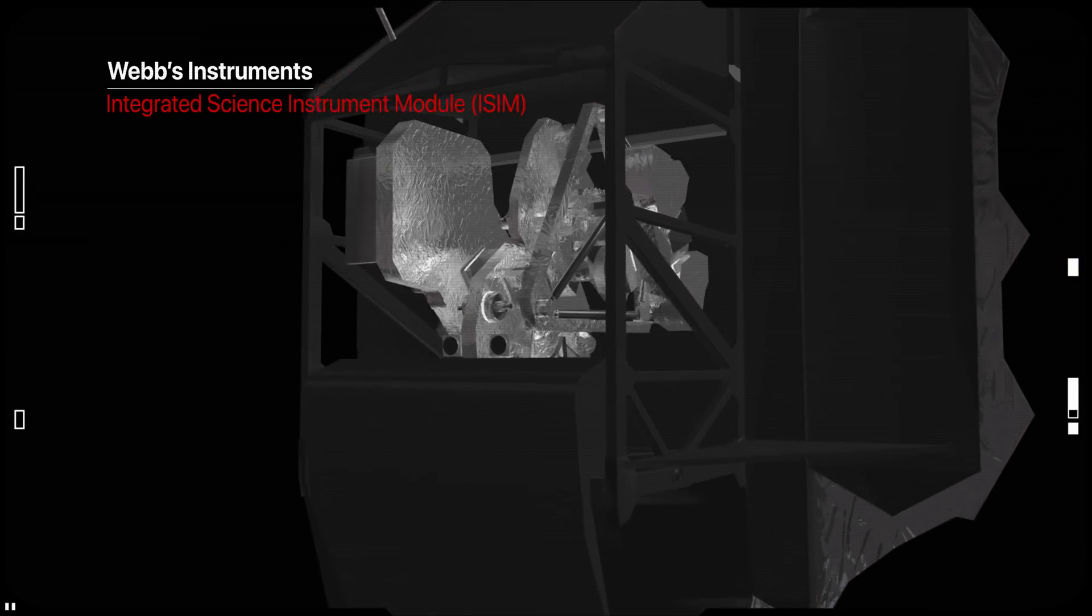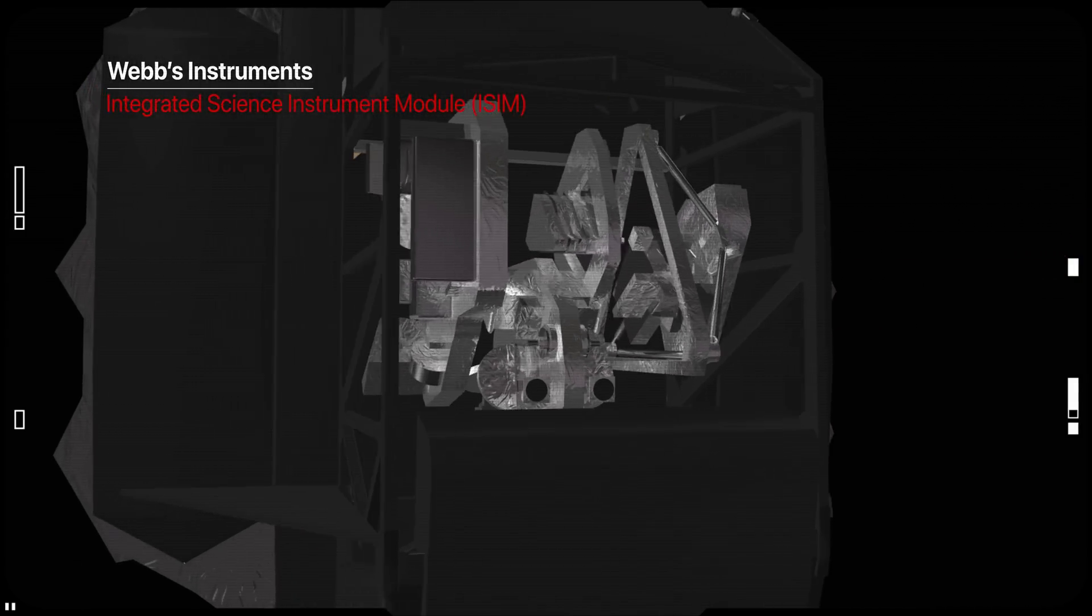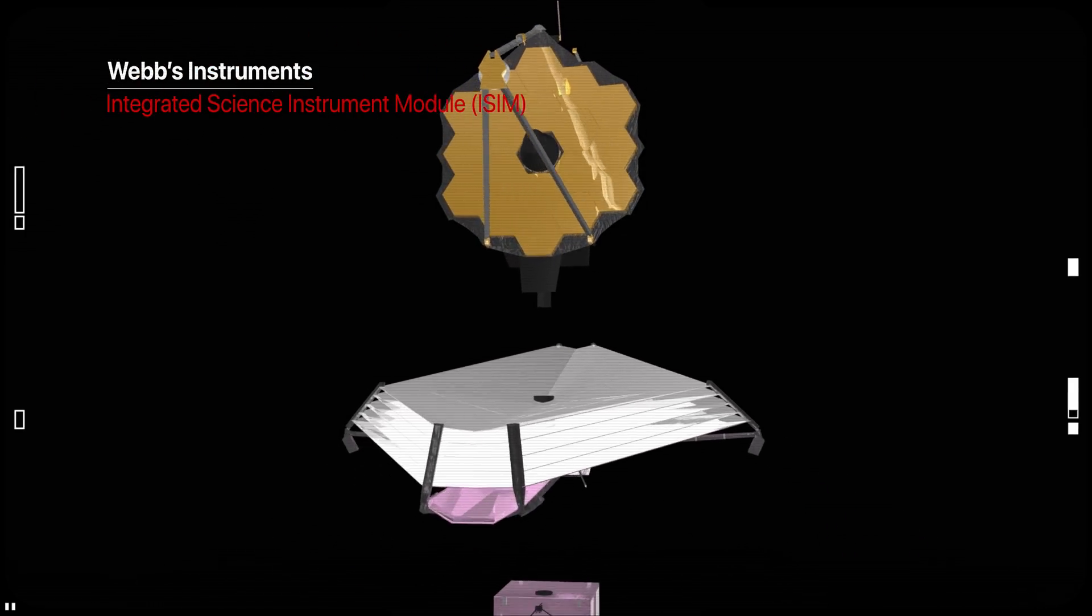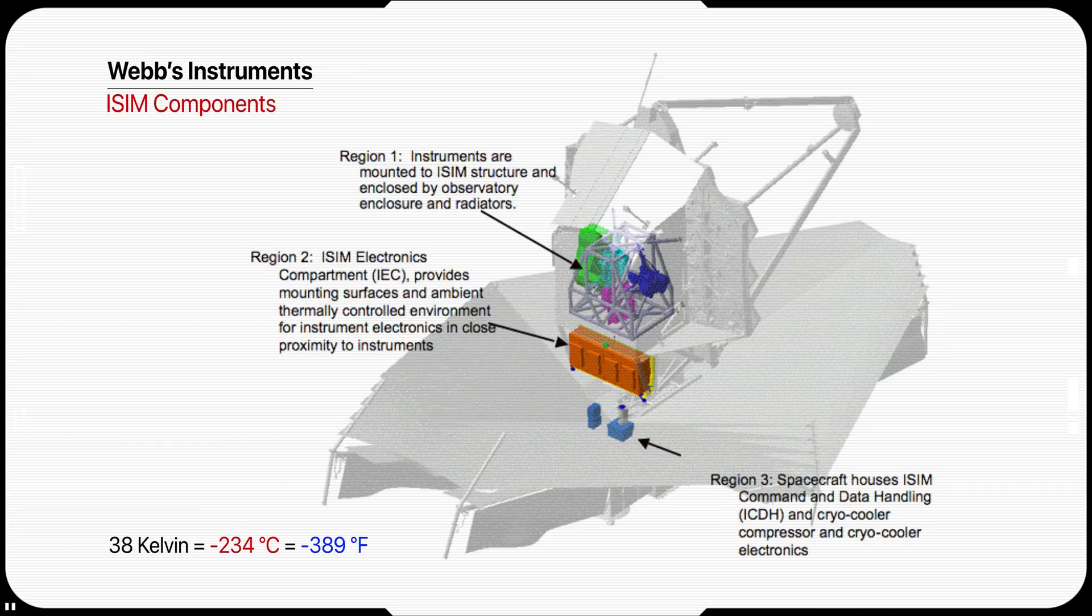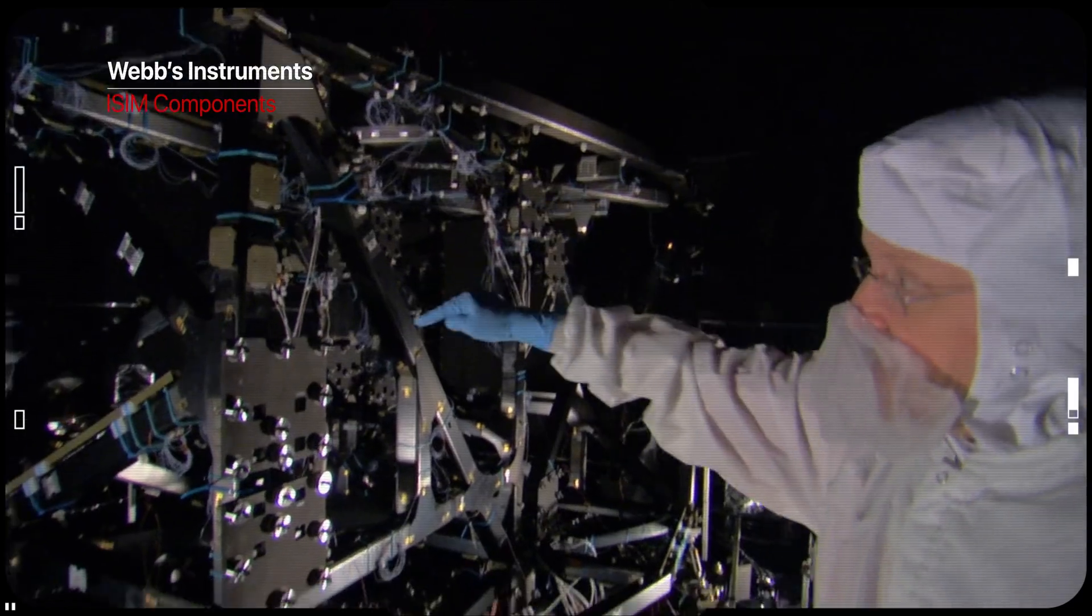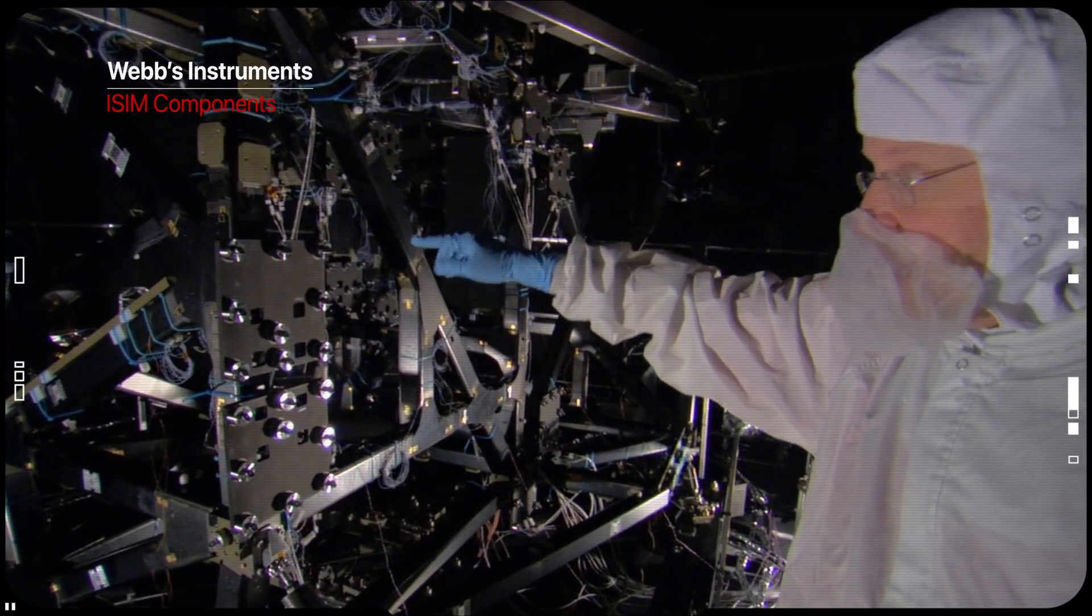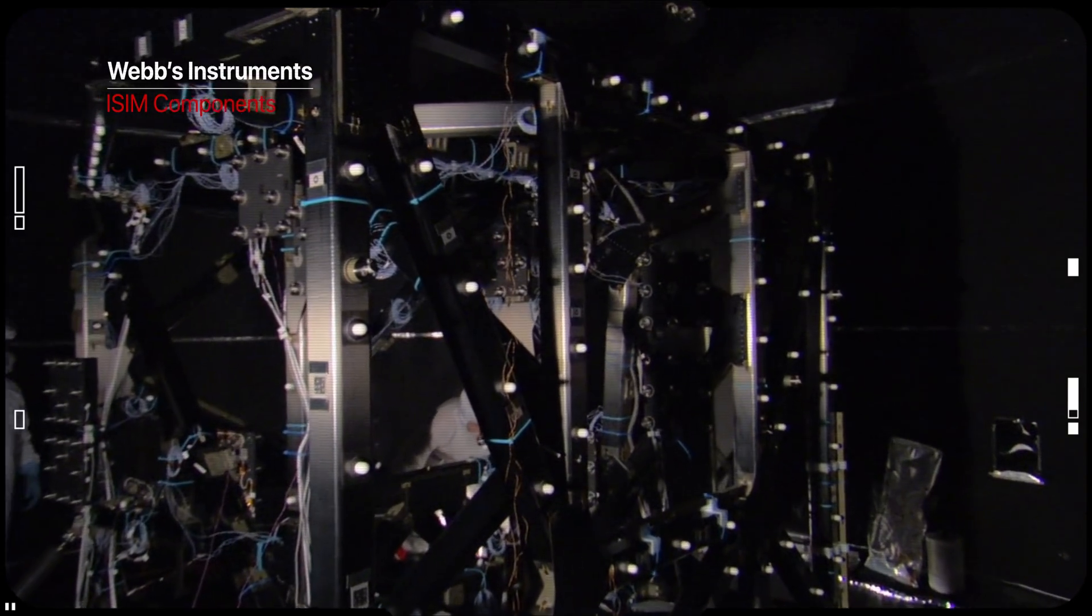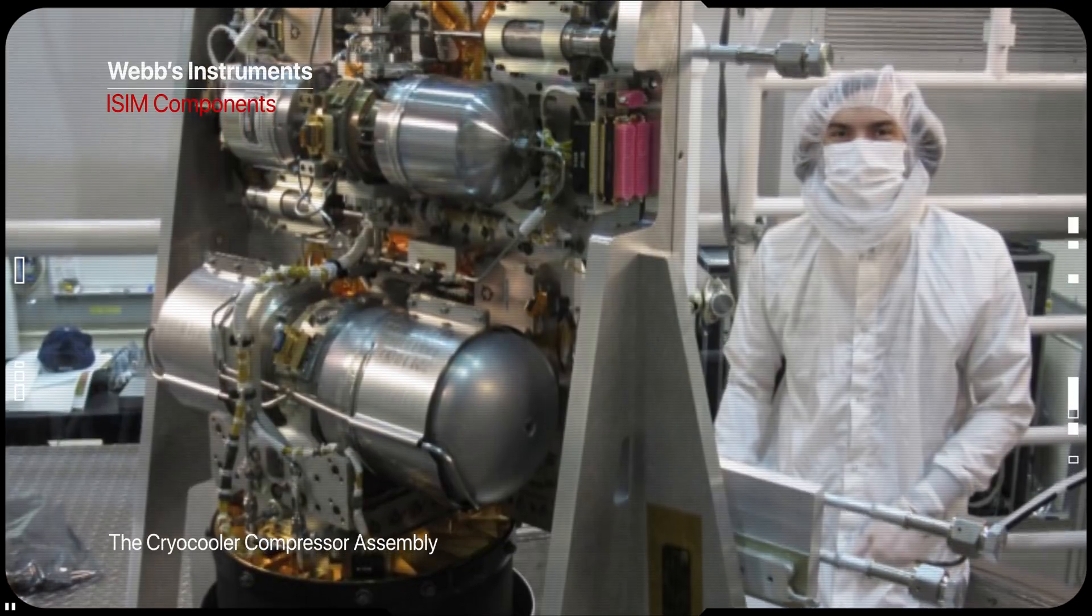Integrating four major instruments and numerous subsystems into one payload, the ISIM is a daunting endeavor. To simplify integration, engineers have divided the ISIM into three regions. The region 1 component is the cryogenic instrument module. This chills the detectors down to 39 Kelvin, a necessary first-stage cooling effort so that the spacecraft's own heat doesn't interfere with the infrared light detected from distant cosmic sources. The ISIM OTE thermal management subsystem provides passive cooling. Other devices will get the detectors even colder.